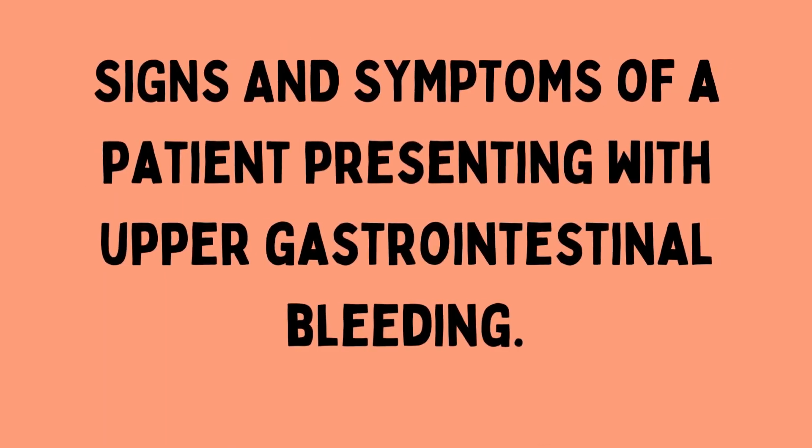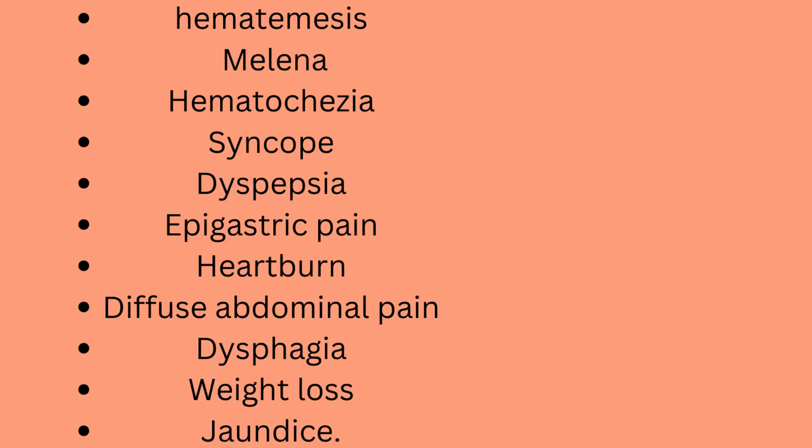Signs and symptoms of a patient presenting with upper gastrointestinal bleeding include: hematemesis, melena, hematochezia, syncope, dyspepsia, epigastric pain, heartburn, diffuse abdominal pain, dysphagia, weight loss, and jaundice.